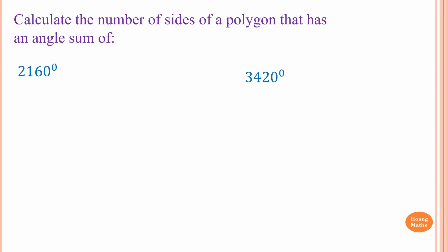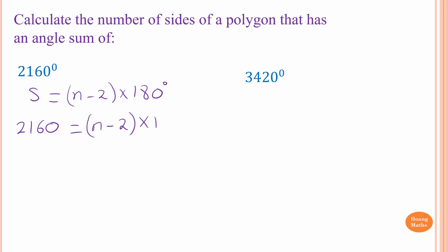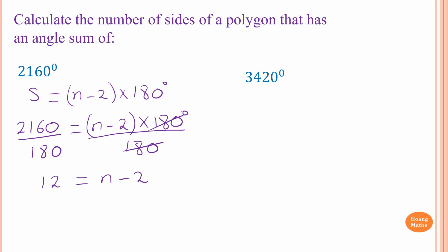Please stop the video and try this one yourself. The sum of interior angles is 2160 degrees. Write out the rule: S = (n − 2) × 180 degrees. So 2160 = (n − 2) × 180. Dividing by 180 gives 12 = n − 2. Therefore n = 12 + 2 = 14.